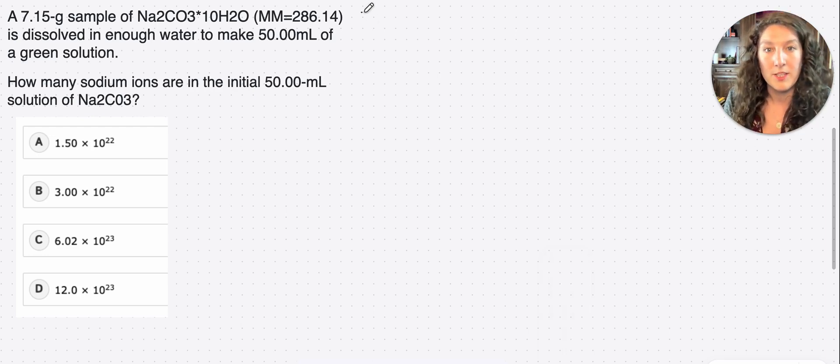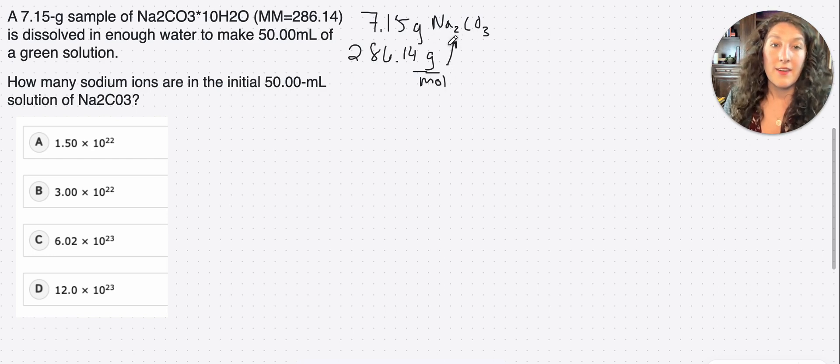So let's start off by just writing 7.15 grams of Na2CO3. And then they also gave us the molar mass, which is 286.14 grams per mole, right? Because that's our units per molar mass. Now if I'm given molar mass and I'm given grams, I'm thinking to myself, they're probably going to want me to calculate the moles of this thing, right? So just always looking for what are they likely to test me on.